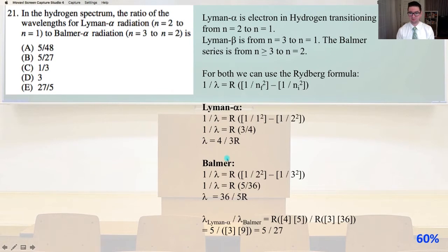For both, we can use the Rydberg formula, where 1 over lambda equals a constant r times the quantity 1 over nf squared minus 1 over ni squared, where nf is our final n and ni is our initial n. For Lyman alpha, 1 over lambda equals r times 1 over 1 squared minus 1 over 2 squared. 1 over lambda equals r times 3 fourths, so lambda equals 4 thirds r.